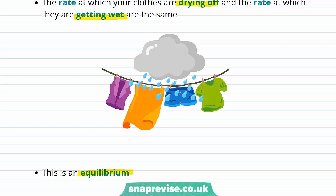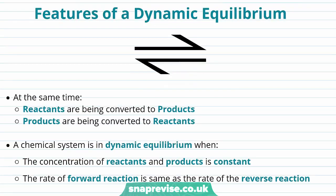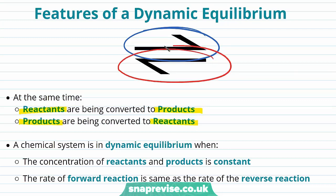Now let's take a look at the specific features of dynamic equilibrium. At the same time, reactants are being converted into products as shown by the forward arrow, and products are being converted into reactants as shown by the backwards arrow. Our chemical system is truly in dynamic equilibrium when the concentration of reactants and products is constant — not necessarily equal, just constant. The rate of forward reaction must also be the same as the rate of reverse reaction.